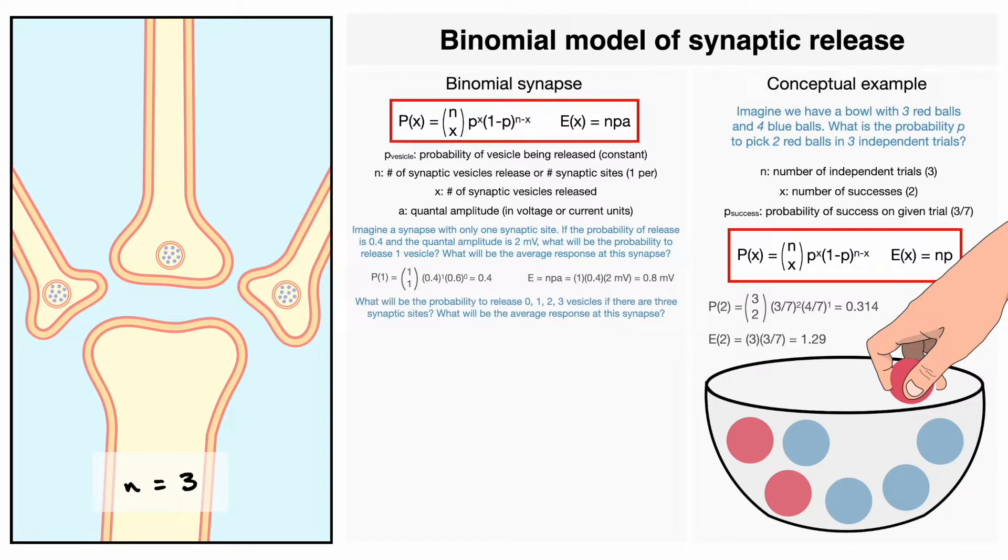What will be the probability to release 0, 1, 2 and 3 vesicles if there are 3 synaptic sites? Again, what will be the average response at this synapse?